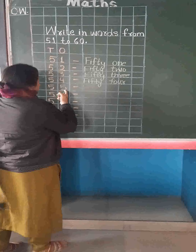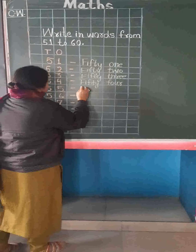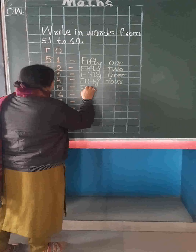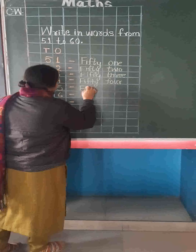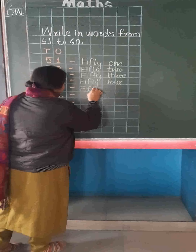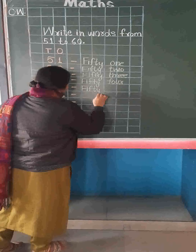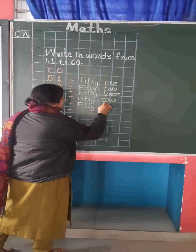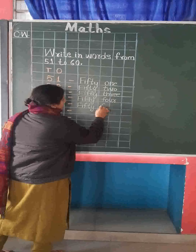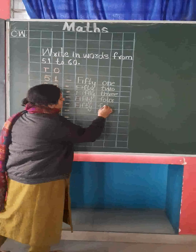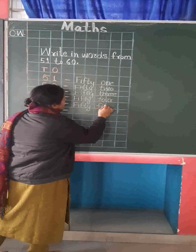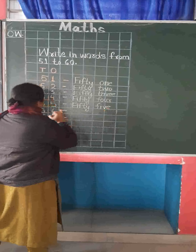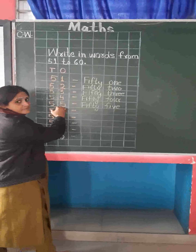Here is 55. So we will write here the spelling of 50: F, I, F, T, Y. 50. Now we will write the spelling of 5: F, I, D, E. 55. This one is 55.